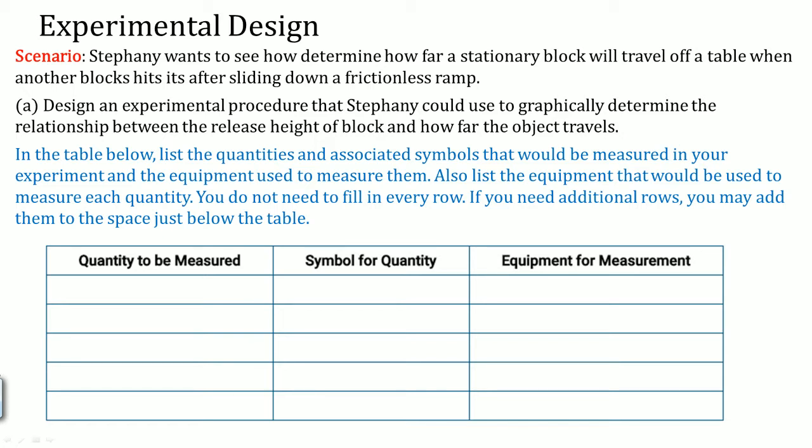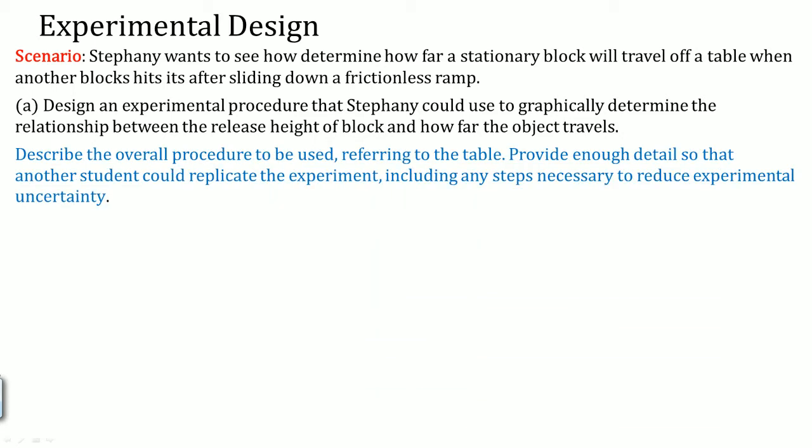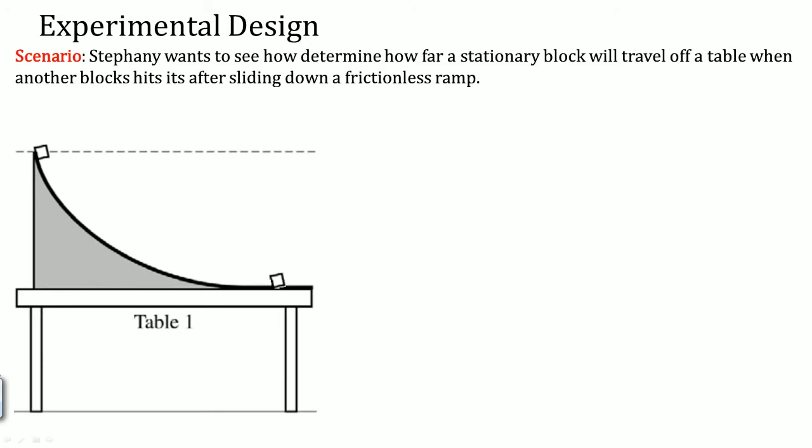You do not have to fill in every single row. If you need an additional row, you may add them to the spaces just below the table. First part is to describe the overall procedure to use, referencing the table. Provide enough details so that another student can replicate the experiment, including any steps necessary to reduce experimental uncertainty.